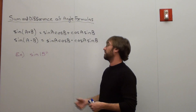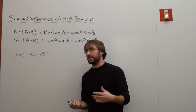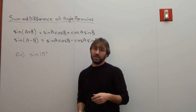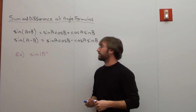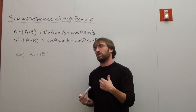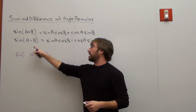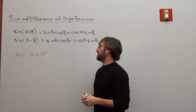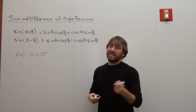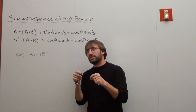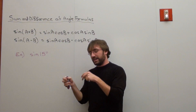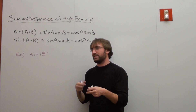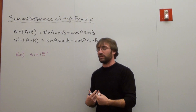So I've got this problem here where it says the sine of 15 degrees. I don't know what the sine of 15 degrees is off the top of my head, but I can use one of these two formulas to figure it out. The most artful way of doing it is using the second formula. The sine of 15 degrees — you've got to think of two numbers that you know the sine of that equal 15, and the easiest one is 60 subtracted by 45 degrees.